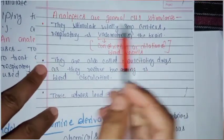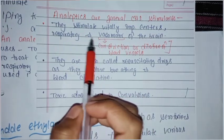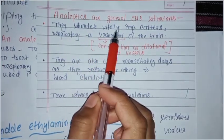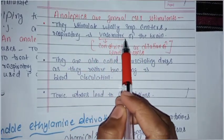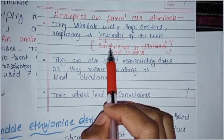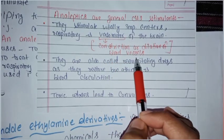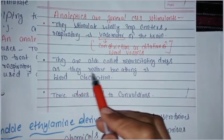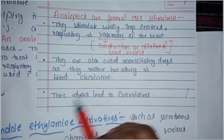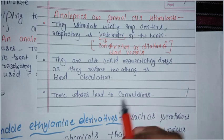We have the first example of CNS Stimulants: Analeptics. They stimulate the vitally important centers, respiratory and vasomotor, of the brain, which controls constriction and dilation of the blood vessels. They are also called respiratory drugs as they restore breathing and blood circulation. Toxic doses lead to convulsions.